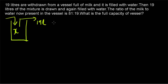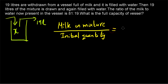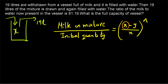The process is repeated again, so totally this process is done 2 times. The ratio of milk to water in the final mixture is given. We have to find x. The shortcut formula is: milk in the final mixture to the initial quantity equals (x minus y) divided by x, the whole raised to the power n. Here x is the initial quantity of the liquid, y is the withdrawn quantity, and n is the number of times the process is repeated.